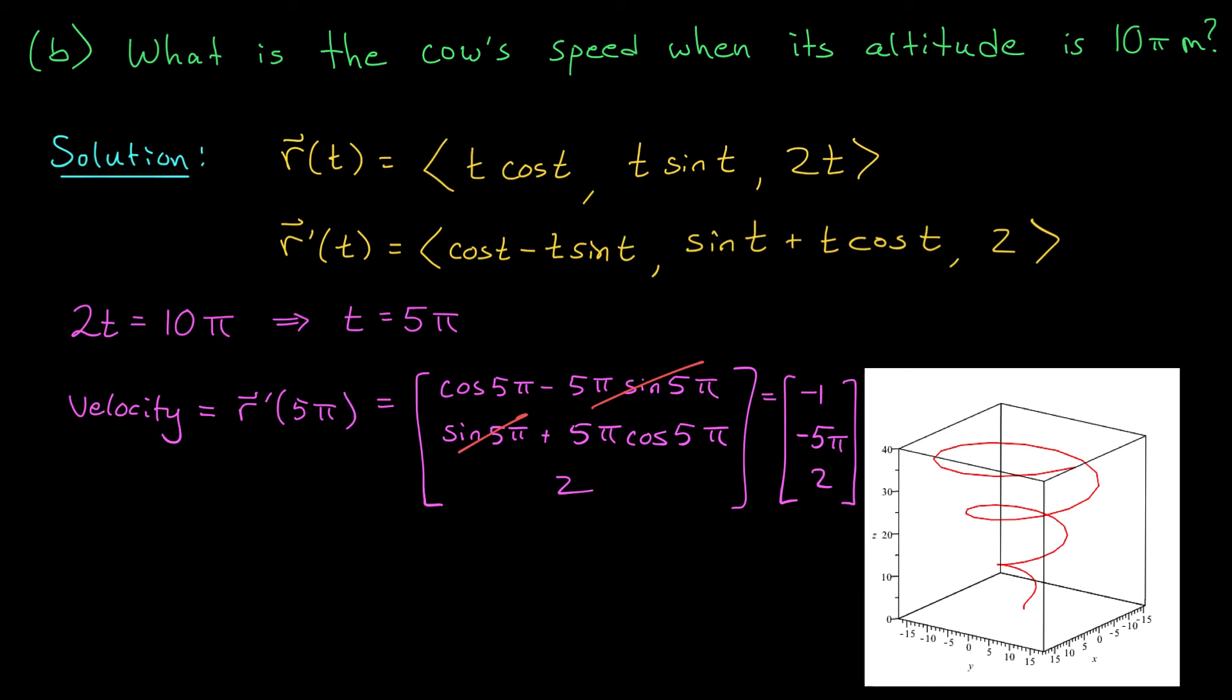At this point, we're ready to compute the speed of our cow. The speed is the norm of this velocity vector. The norm of minus 1, minus 5 pi, 2. That's the square root of minus 1 squared, plus minus 5 pi squared, plus 2 squared. If you simplify this, you should get the square root of 5 plus 25 pi squared. Using your calculator, you'll find that this is approximately 15.866 meters per second.